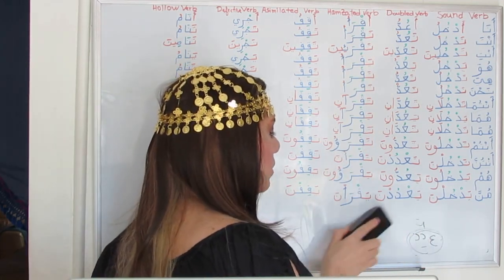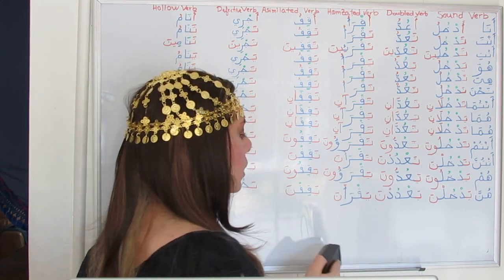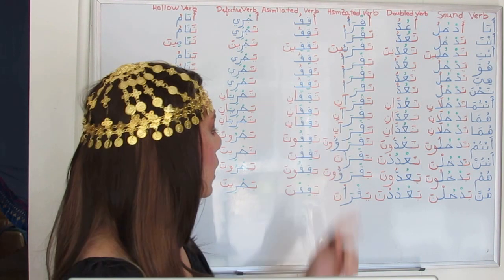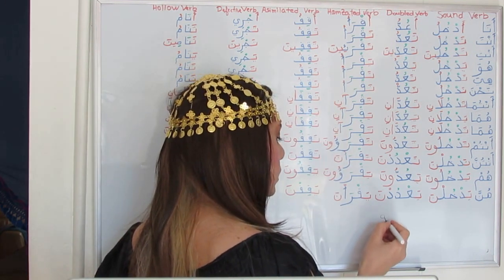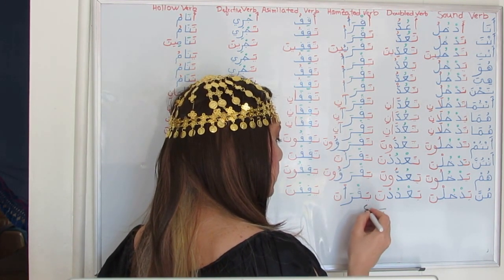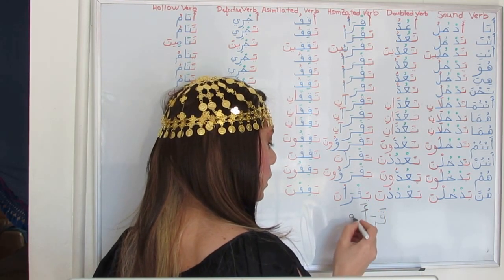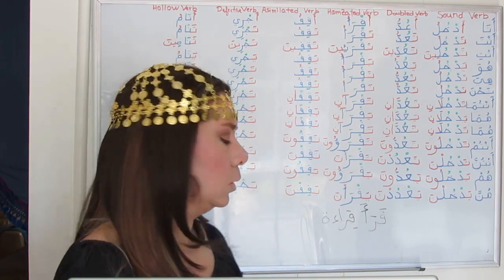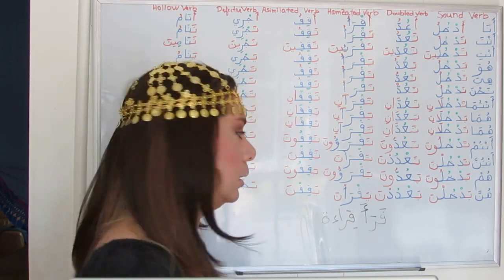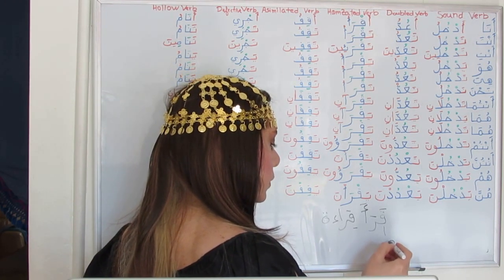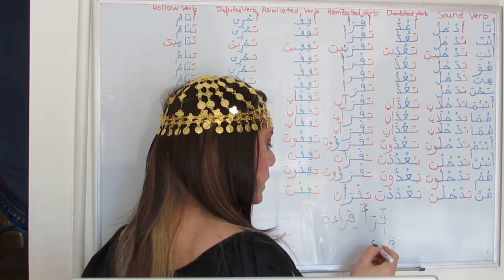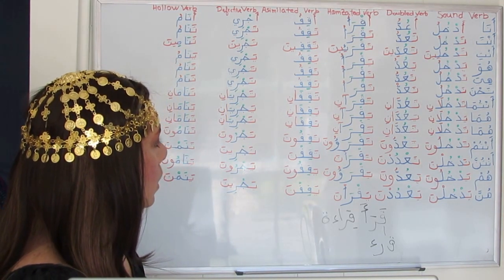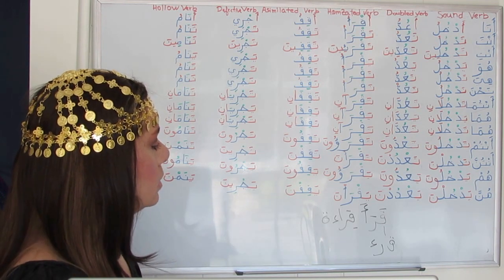The Hamzated verb contains a Hamza among its root letters. Here, 'qara'a' — to read. The verbal noun is 'qira'a,' meaning 'reading,' and the root is Qaw, Ra, and Hamza. Let's see how to conjugate it.